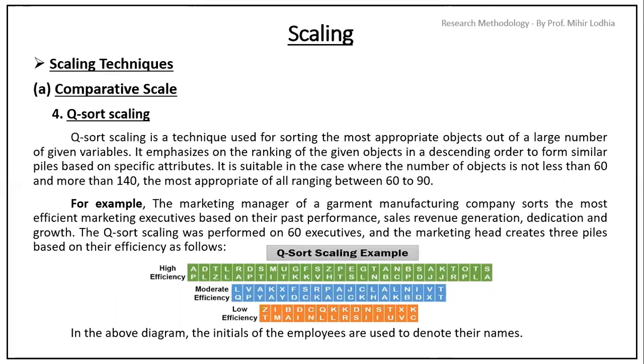Last one is Q-sort scaling. Q-sort scaling is a technique used for sorting the most appropriate objects out of a large number of given variables. It emphasizes on the ranking of the given objects in a descending order to form similar piles based on specific attributes. It is suitable in the case where the number of objects is not less than 60 and more than 140, the most appropriate of all ranging between 60 to 90. For example, the marketing manager of a garment manufacturing company sorts the most efficient marketing executive based on their past performance, sales revenue generation, dedication and growth. The Q-sort scaling was performed on 60 executives and the marketing head creates 3 piles based on their efficiency.